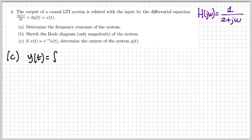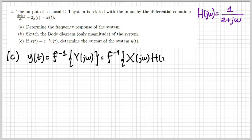Now let's go on with part C. We're given an input x(t) = e^{−t}·u(t) and need to determine the output. The output y(t) can be obtained as the inverse Fourier transform of Y(jω). So we calculate the output in the frequency domain — which is the product of X(jω) and H(jω) — and then take the inverse transform.